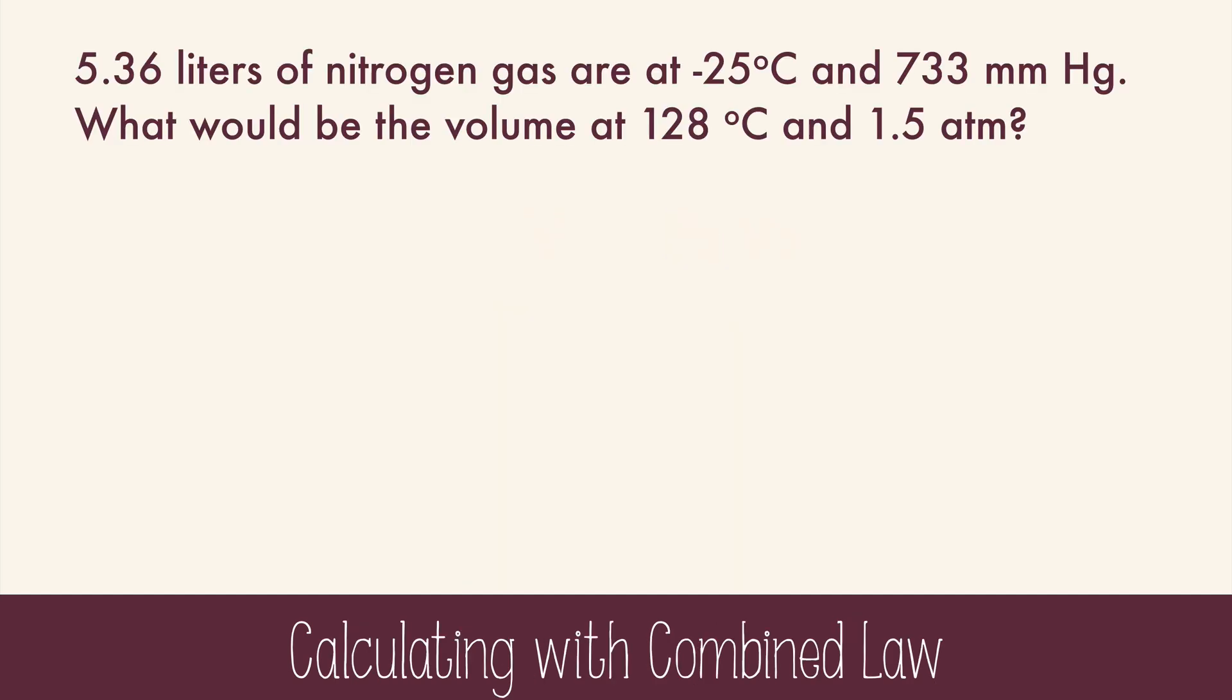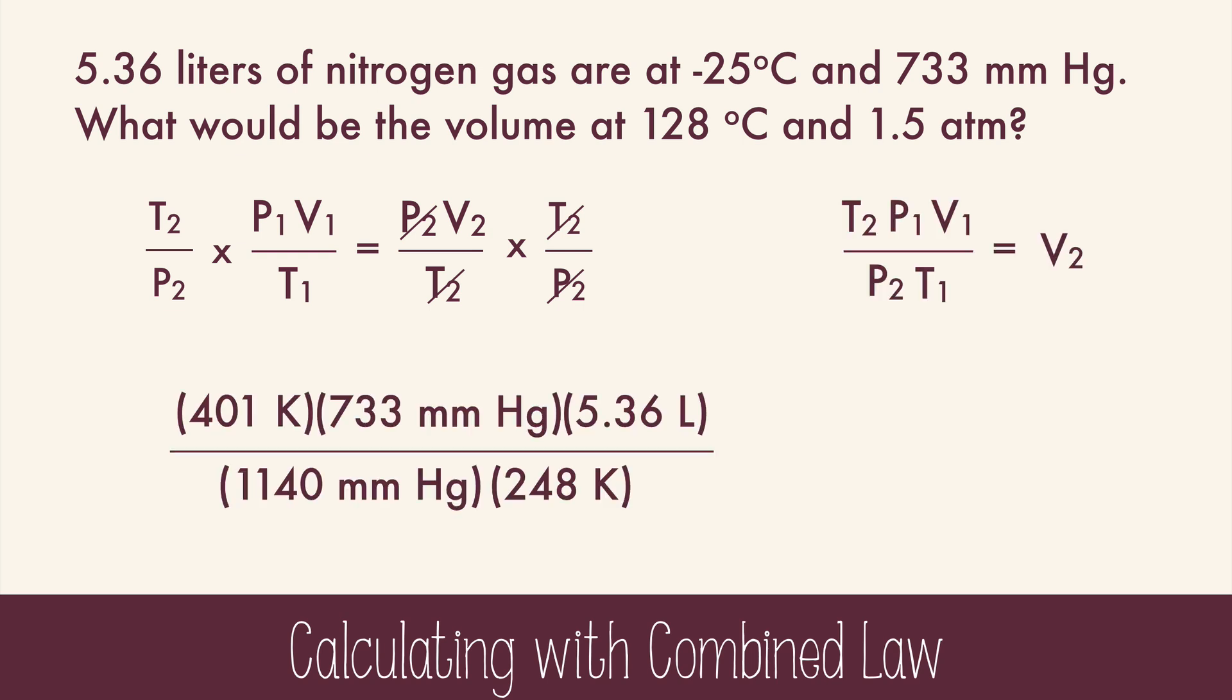Let's try a problem with this. 5.36 liters of nitrogen gas are at negative 25 degrees Celsius and 733 millimeters of mercury. What would be the volume at 128 degrees Celsius and 1.5 atm? We are trying to find the final volume, so let's rearrange this equation to get V2 alone. We multiply both sides of the equation by T2 over P2, and when we clean this up, we get this pretty equation. Now we can just plug in our data, being sure to turn Celsius into Kelvin, and to have the same types of pressure units. I chose to turn atmospheres into millimeters of mercury, but you could have gone the other way as well. Then you do your calculations, and you get the volume is 5.57 liters.